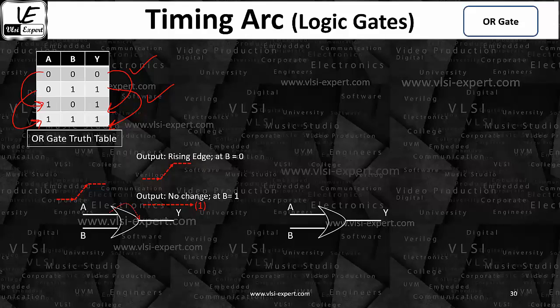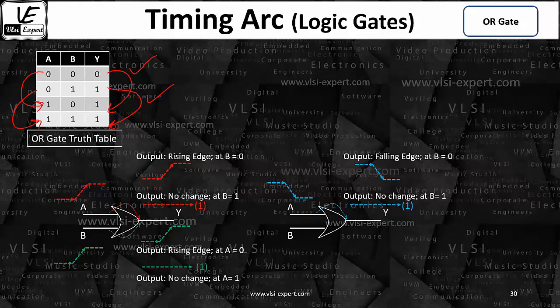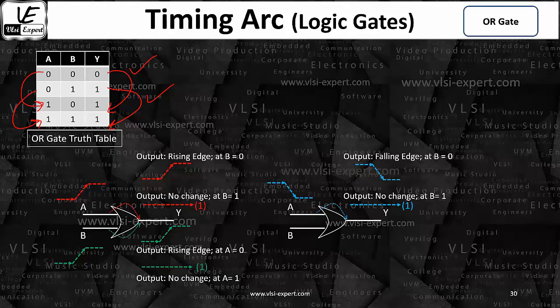Similarly, the same trend is happening in case of B also. Rising edge, you are getting a rising edge, or there is no change. Now you are applying falling edge, you are getting a falling edge, or there is no change. Similarly for the B pin also.